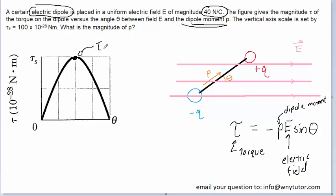This would be the maximum torque according to the graph. We can see that the maximum torque is equal to this value tau sub s, and that was stated in the question to be this value right here. So we do have the torque, as long as we use the maximum value. We do have the electric field magnitude.